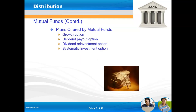Plans offered by mutual funds include growth options, dividend payout, and dividend reinvestment plan. Under the dividend reinvestment option, dividends are added back into the principal investment, giving a compounding return similar to how interest is added to the principal in a fixed deposit.